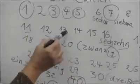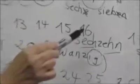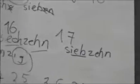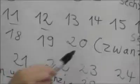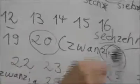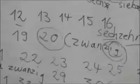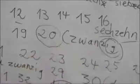And then we go dreizehn, vierzehn, fünfzehn, sechzehn, siebzehn, achtzehn, neunzehn, zwanzig. And here we have the ending C-I-G. And all the tens up to a hundred have the C-I-G.